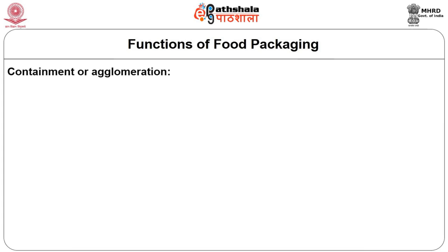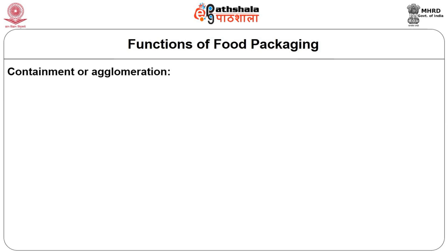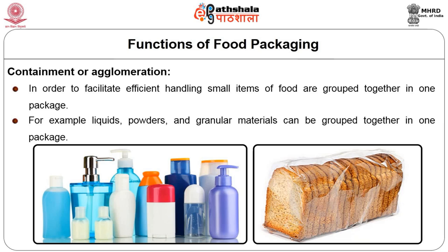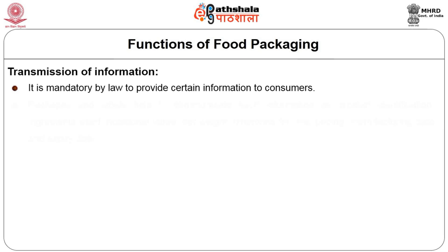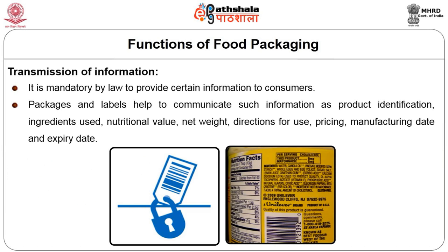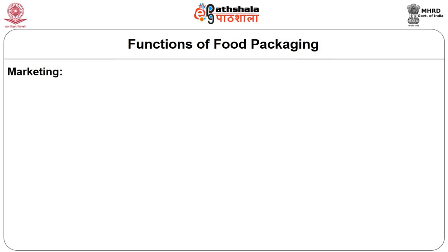The third function is Containment or agglomeration. In order to facilitate efficient handling, small items of food are grouped together in one package. For example, liquids, powders, and granular materials can be grouped together in one package. The next function is Transmission of information. It is mandatory by law to provide certain information to customers. Packages and labels help to communicate such information as product identification, ingredients used, nutritional value, net weight, directions for use, pricing, manufacturing date, and expiry date.